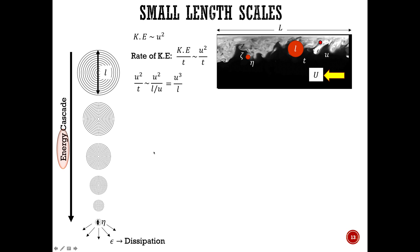Now let's look at the smallest length scale. The rate at which dissipation occurs at the smallest length scale is proportional to nu (ν), the kinematic viscosity, times S_ij, the rate of shear strain tensor. We saw an expression for this in the last class — it's a function of the velocity gradients.